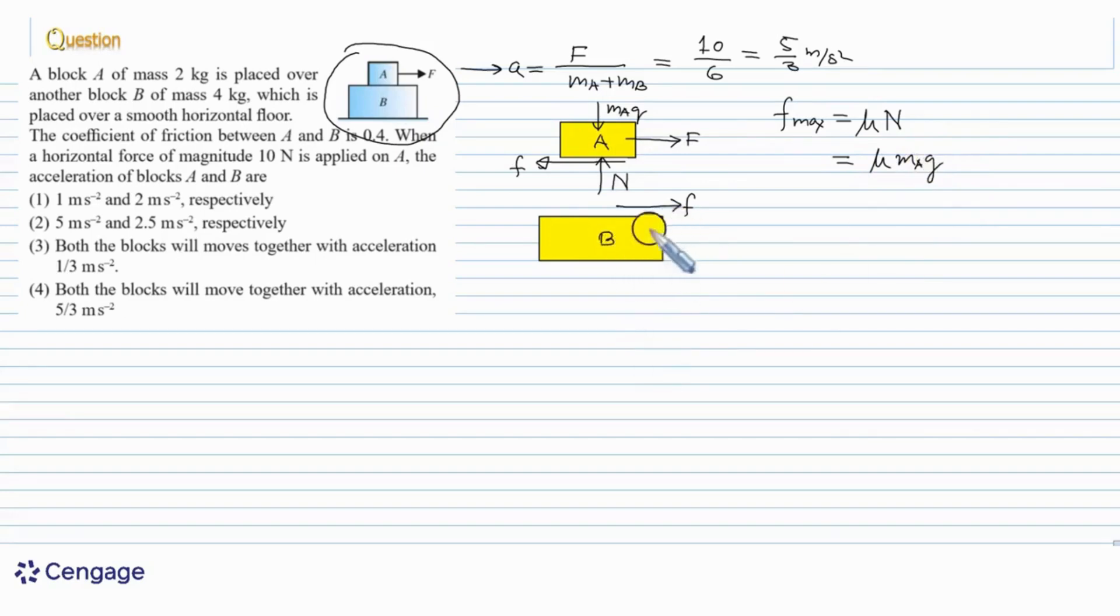Now, we can find the maximum possible acceleration of block B. Maximum possible acceleration of block B should be equal to applied force which is responsible for the motion of block B, that is F max divided by mass of block B, that is Mb. So, this is equal to mu multiplied by MaG divided by Mb. And we know mu is equal to 0.4. So, this is 0.4 multiplied by Ma equals 2, G we have taken 10, Mb equals 4. If we calculate this is equal to 2 meter per second square.